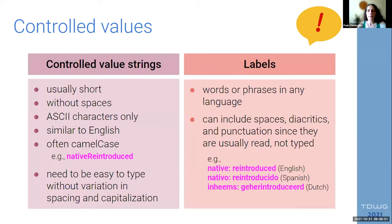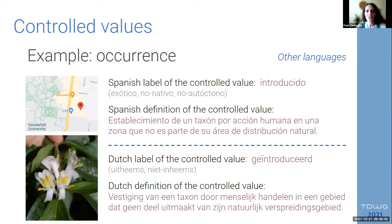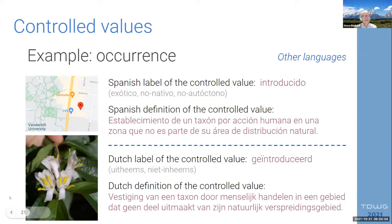Steve jumps in: actually the label for 'introducido' includes the stuff in parentheses. In this particular case, I think there are two different terms that involve things that are introduced, so we distinguish between them — for example, were they introduced on purpose or accidentally? Being able to have this longer explanation with parentheses in the label makes it really understandable for a human.